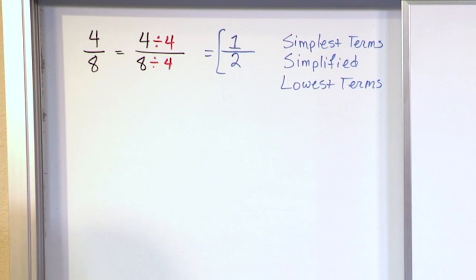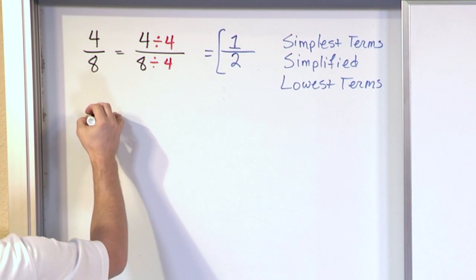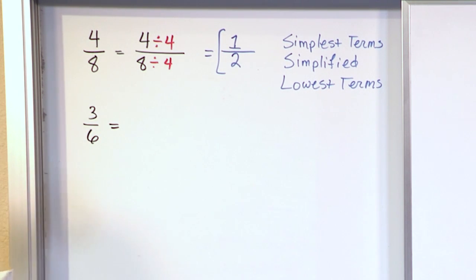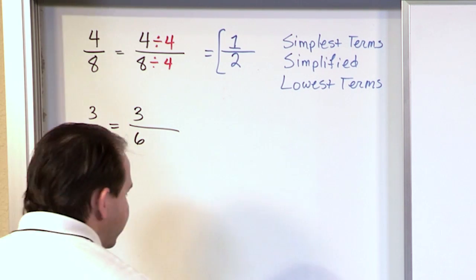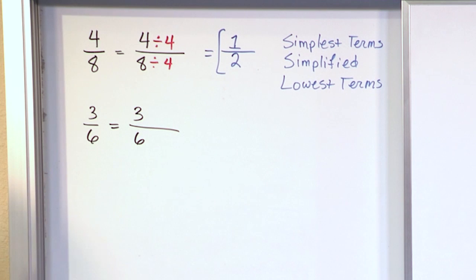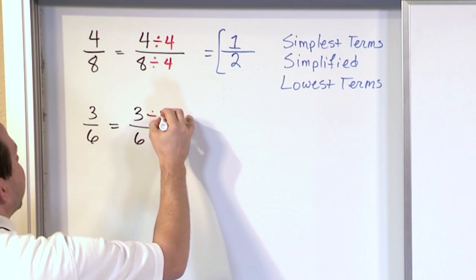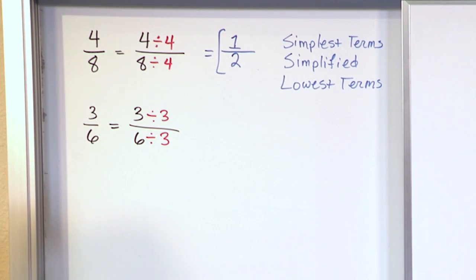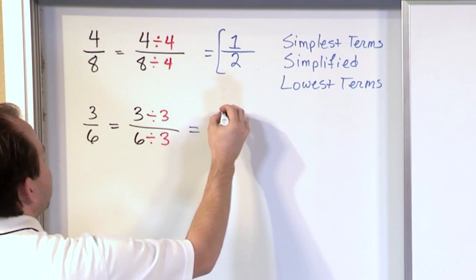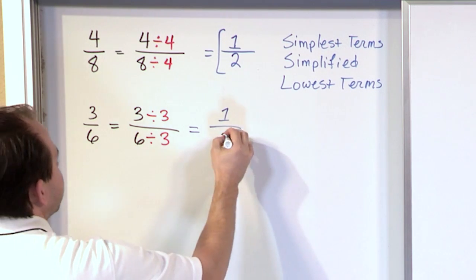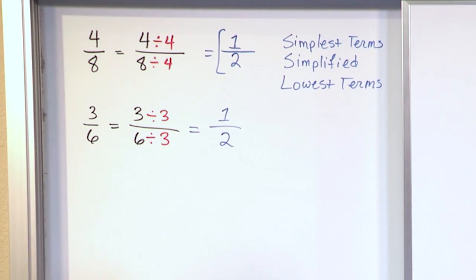Let's do a couple more examples. If we have the fraction 3 sixths and want to make it into lowest terms, we rewrite it and ask: is there something we can divide the top and bottom by to make it simpler? Yes — we can divide by 3 on the top, and we also divide by 3 on the bottom. Three divided by 3 on top is just 1. Six divided by 3 on the bottom is just 2. So this, again, is simplified or lowest terms.